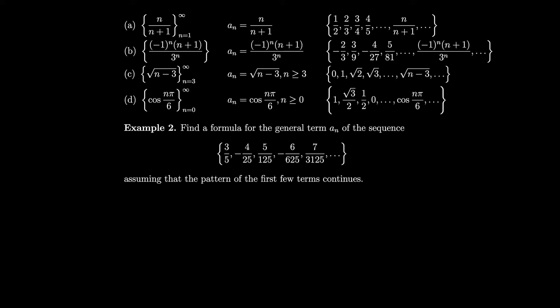In our next example, we have cos(nπ/6), and the sequence starts at n=0. The first term corresponds to n=0, so we plug that in and see what numbers we get.